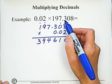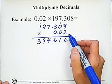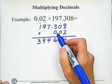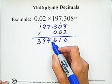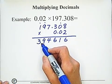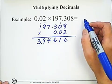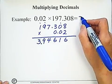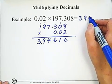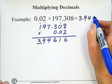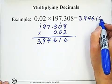0.02 has 2 decimal places and 197.308 has 3 decimal places, totaling 5. So counting 1, 2, 3, 4, 5 from the right, the answer is 3.94616.